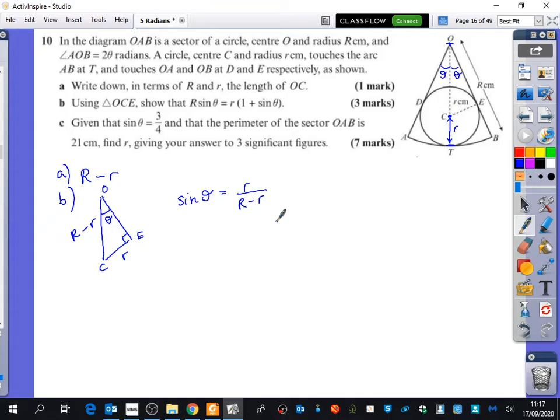Is that beautiful? No, not yet. We're still doing this bit, which is to show that this is true. So if I multiply this up, I get R minus r brackets sine theta equals r. So that's R sine theta minus little r sine theta equals r. So capital R sine theta equals r brackets one plus sine theta, as it shows like that, just from the algebraic manipulation.